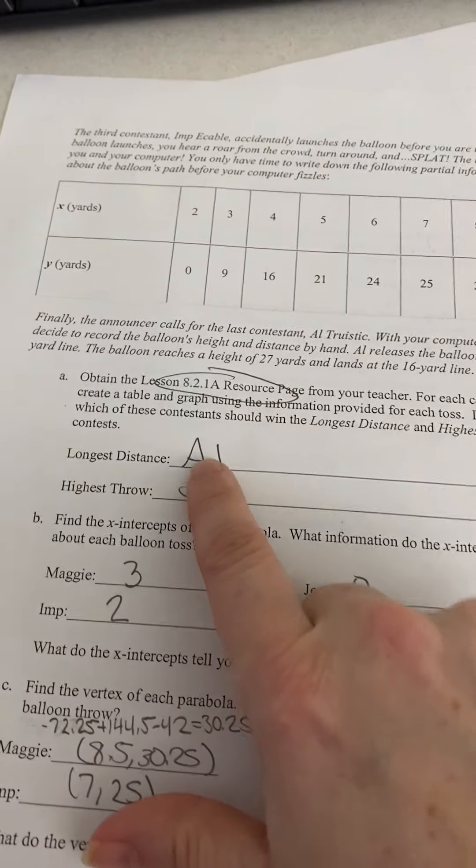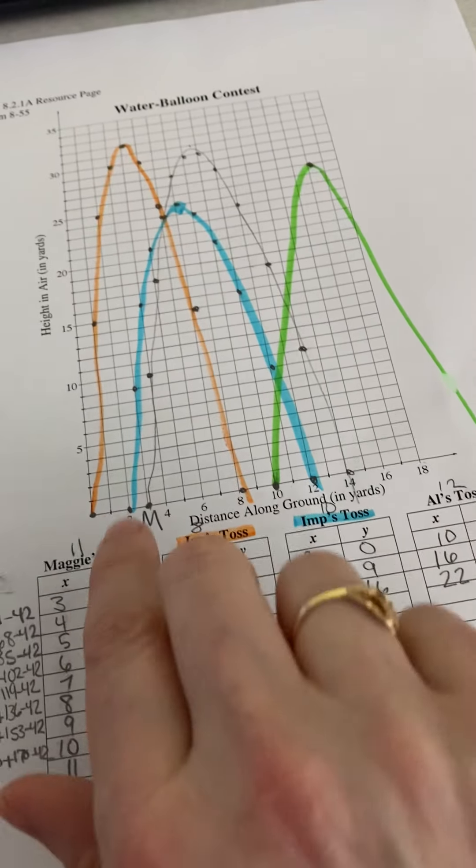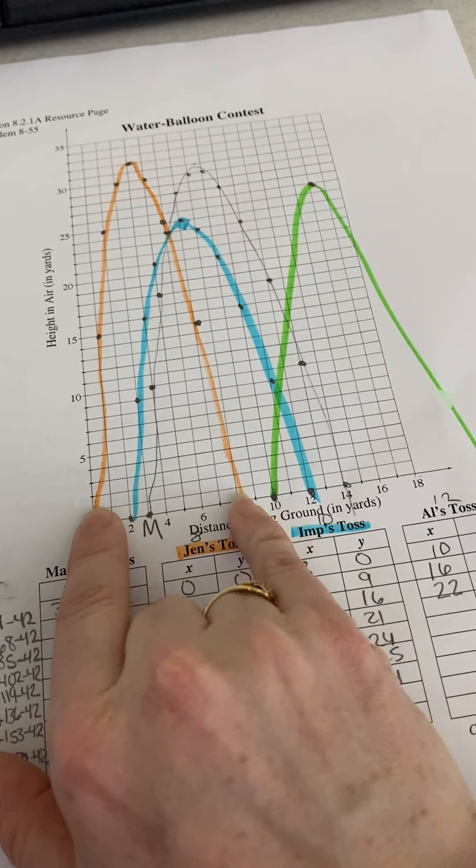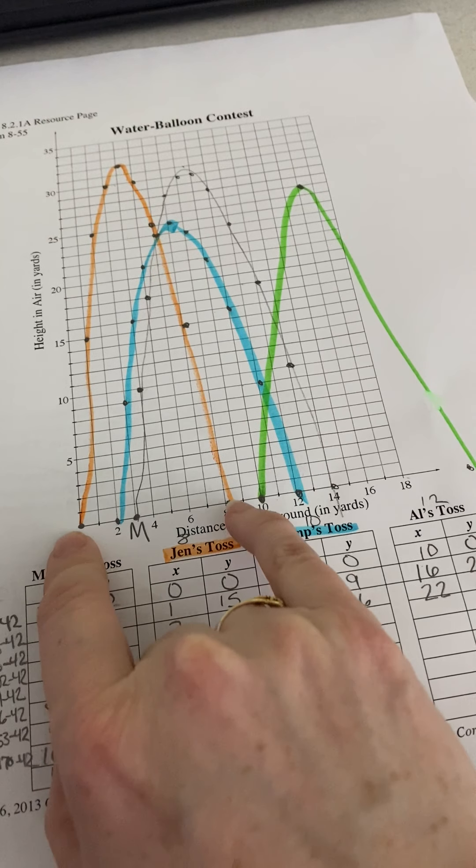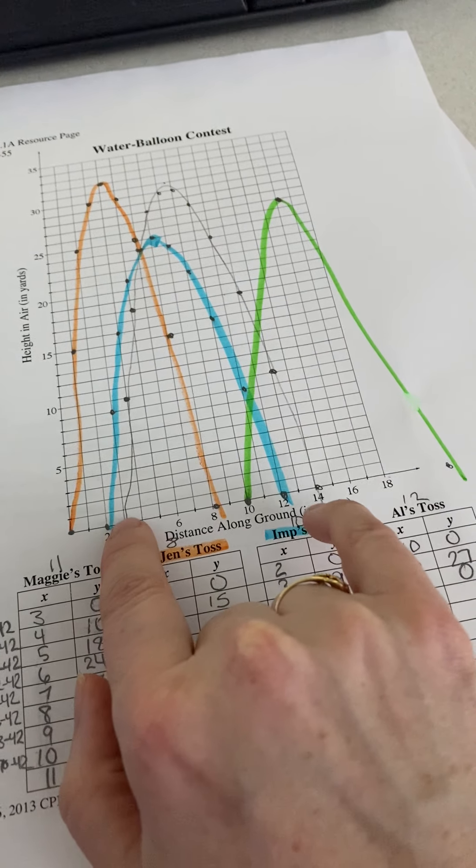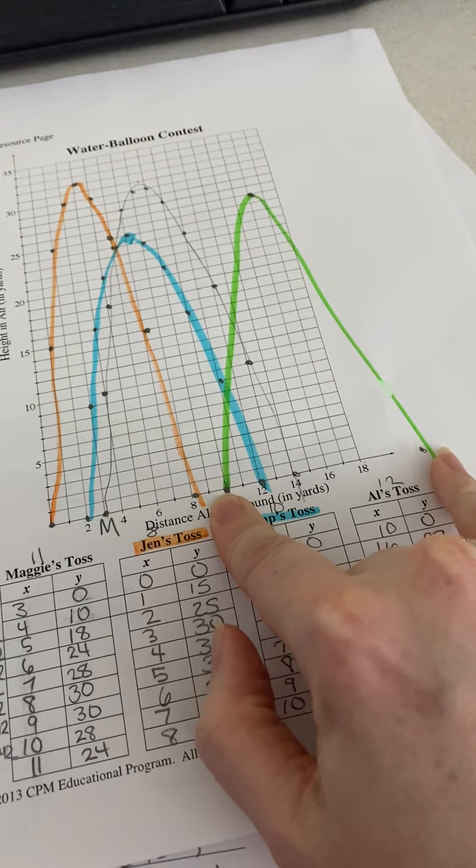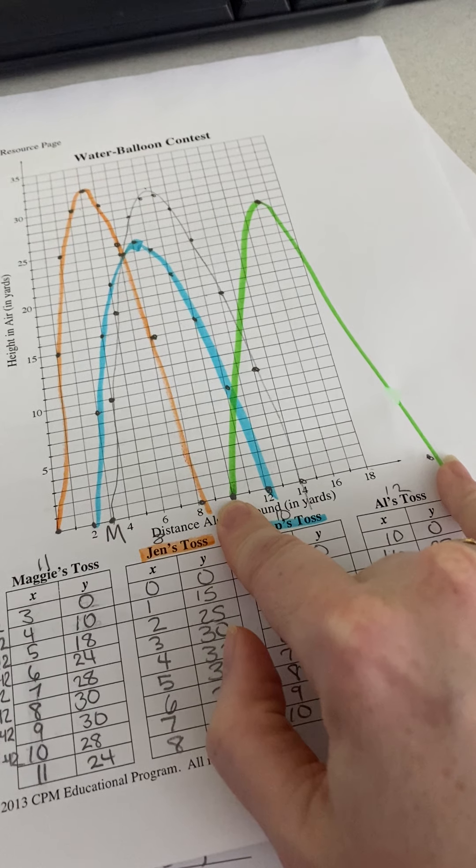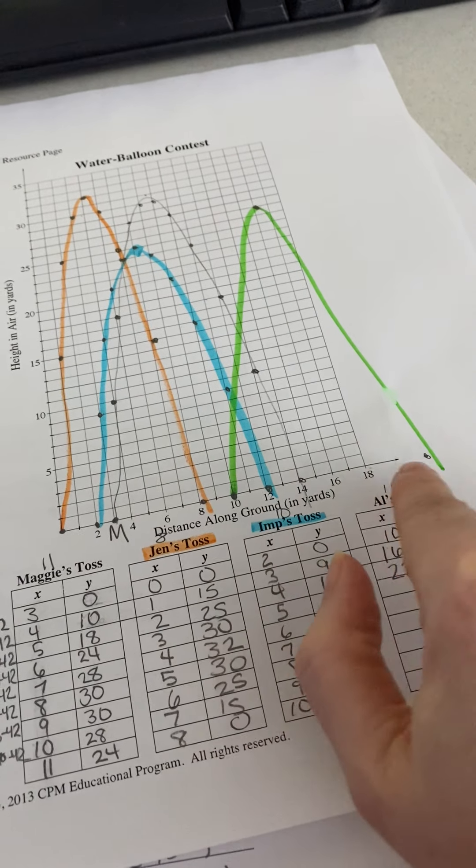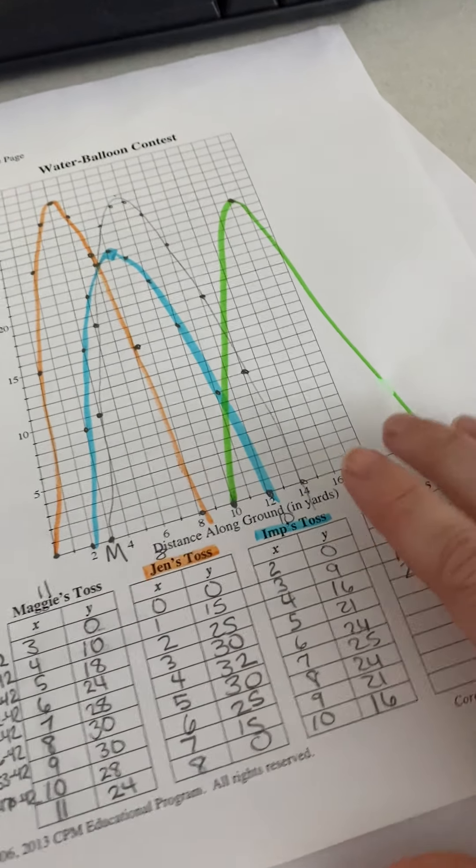So, the questions. Who had the longest distance? So, to look for the longest distance, that's going to be from start to finish. So, from 0 to 8, or from 2 to 12, or from 3 to 14, or from 10 to 22. And 10 to 22 is 12 difference. 22 minus 10 is 12. So, that's going to be the longest. So, that was Al.